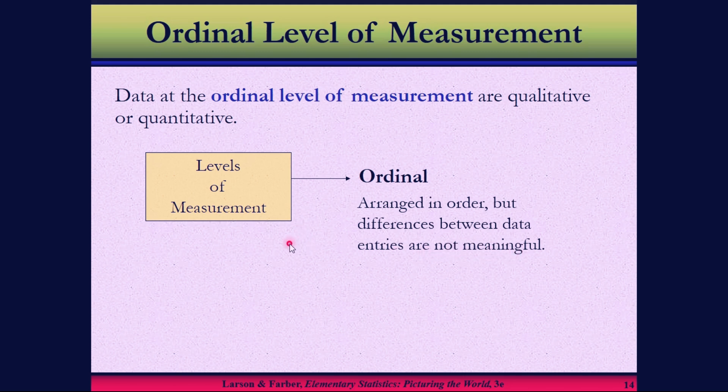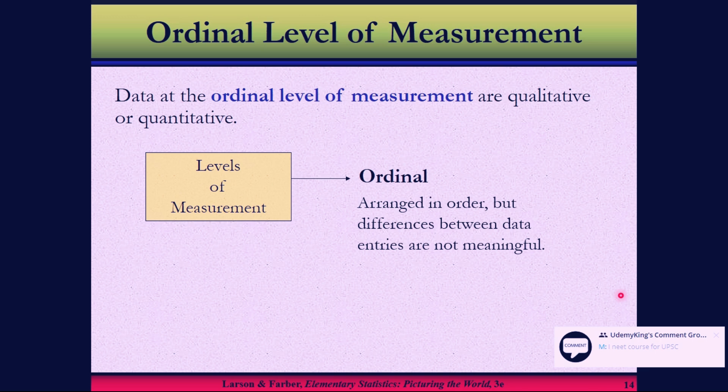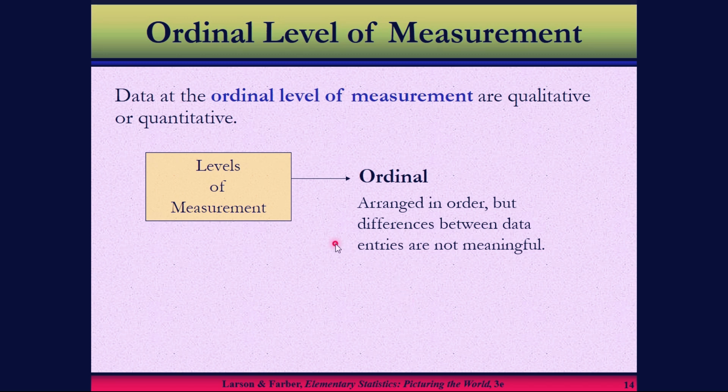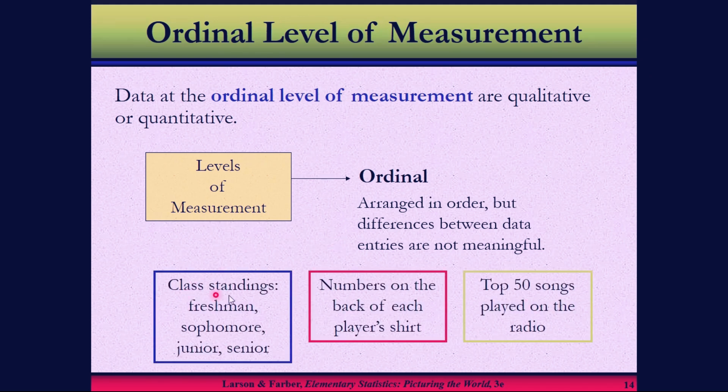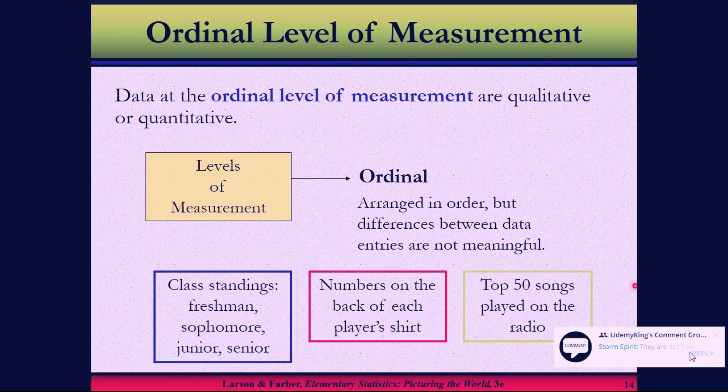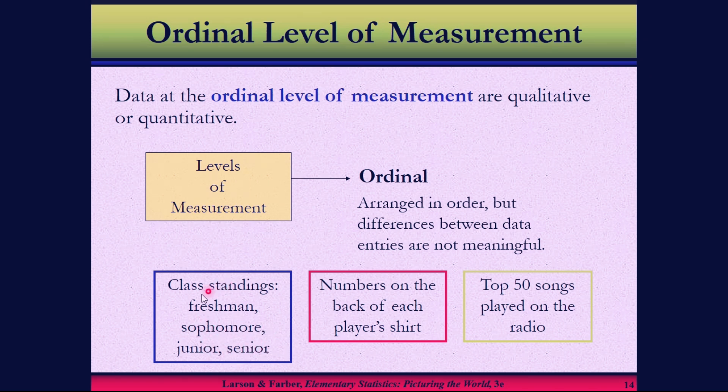The criteria for ordinal: arranged in order, but differences between the data entries are not meaningful. You're able to arrange in order, but it's not possible to define their difference. Let's say class standing in university is freshman, sophomore, junior, or senior. We know the freshman is the beginning, and we can determine the order, with senior being the highest. But the difference between freshman and sophomore is not clearly defined.